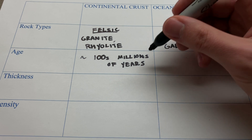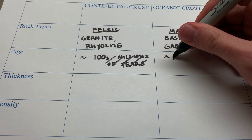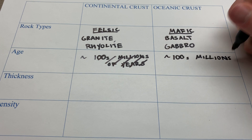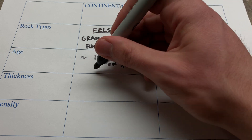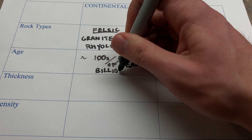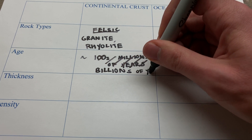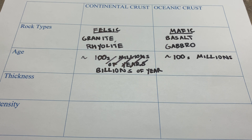Oceanic crust is on the order of hundreds of millions of years, and continental crust, because it sticks around for so much longer, is on the order of billions of years — maybe around two billion years old on average. A billion is 10 times as much as 100 million, and that is getting to be a lot more significant in terms of geologic time. The Earth is around 4.5 billion years old, so take that for what it's worth.